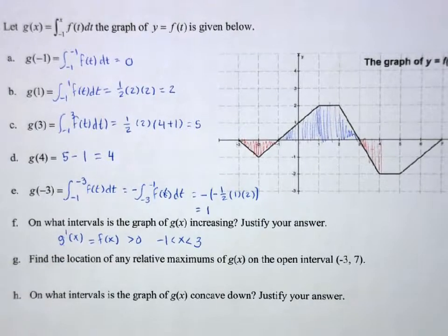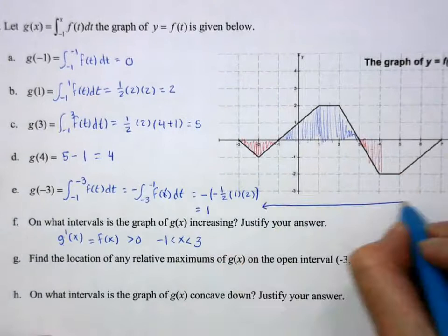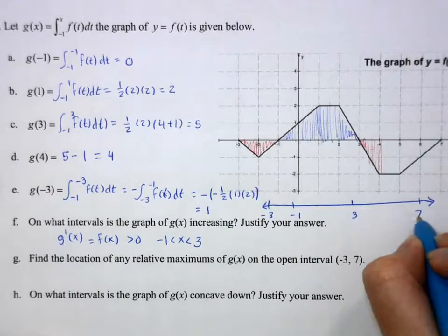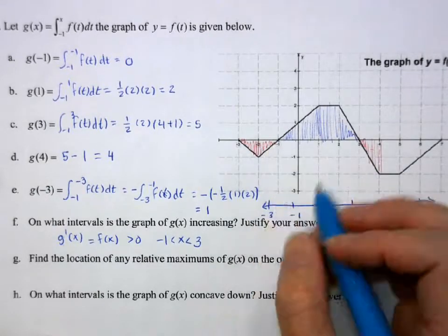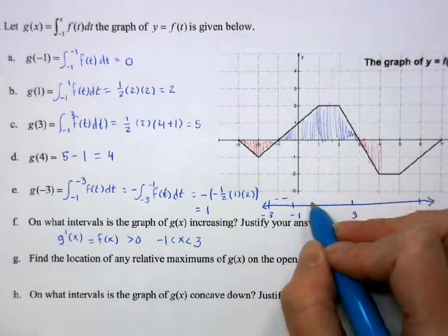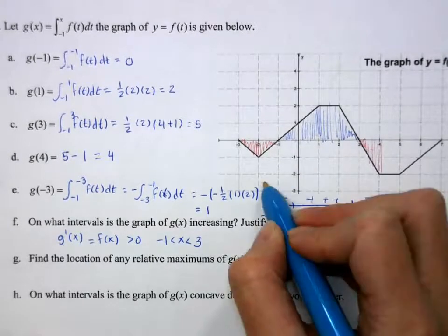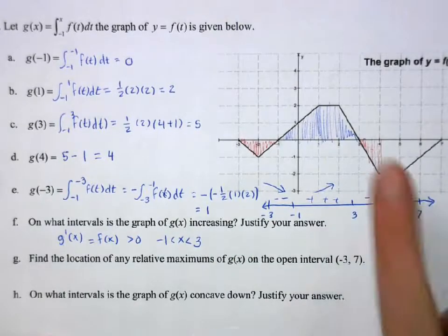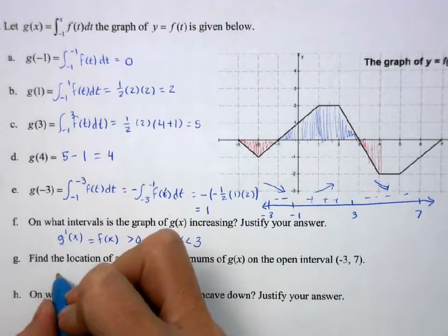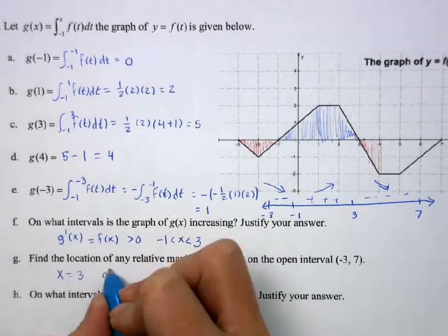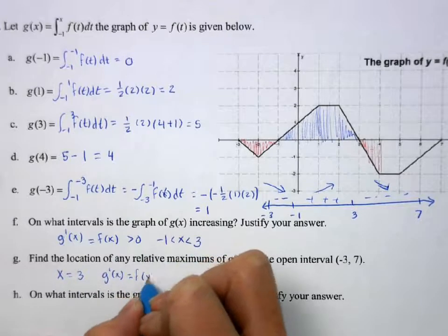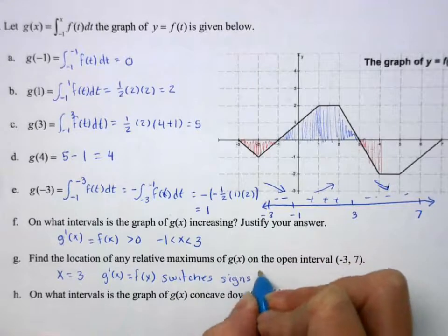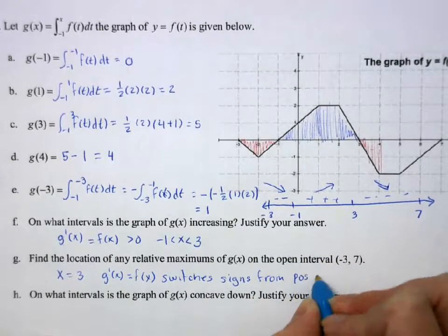Any relative maximums? We turn this into a number line. Negative 1 — our critical points are where g prime equals 0. The function is below the x-axis here, so it's negative, then positive, then negative. So the graph is decreasing, then increasing, then decreasing. We have a relative maximum at x equals 3.